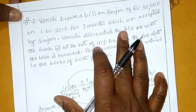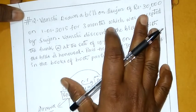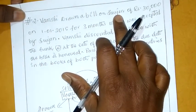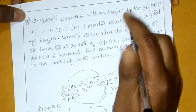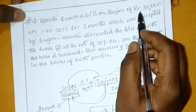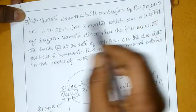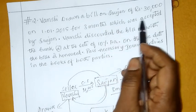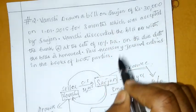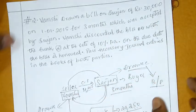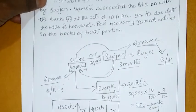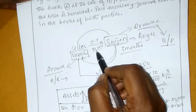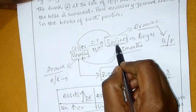So, I am clear that the bill is drawn by Vamshi on Shrujan. Credit purchases Rs. 30,000 on 1st January 2015 — three months bill drawn. Accepted by Shrujan with signature. Vamshi is the seller — credit sales Rs. 30,000 goods; Shrujan is the buyer — purchase.